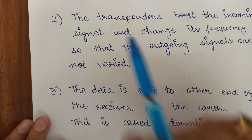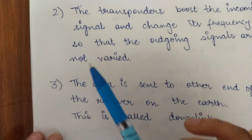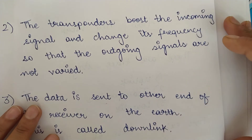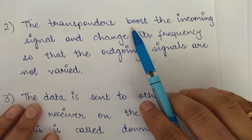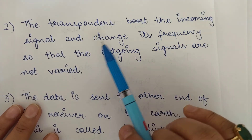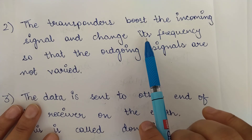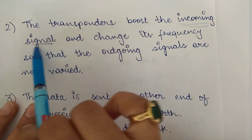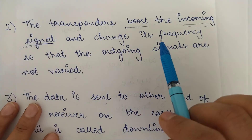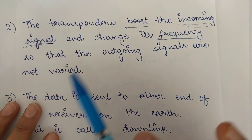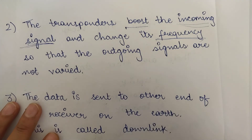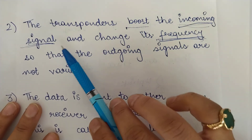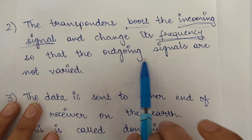In the second stage, the transponders boost the incoming signals. Whatever signal the satellite receives from the ground station is boosted or amplified by the transponders. These incoming signals arrive at a particular frequency range, and when they are rebroadcast after boosting, the frequency range is changed so that there is no interference between the incoming signals and the signals being rebroadcast.